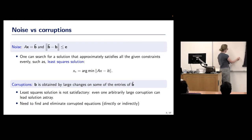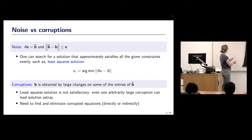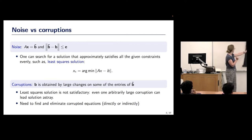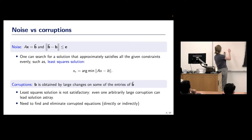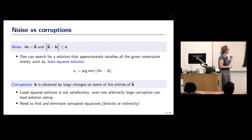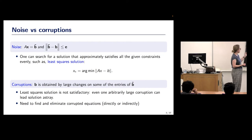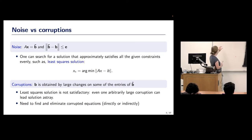I think about this a lot geometrically. When I have my linear system, I have these equations intersecting at one point. Having something wrong with b is just shifting one of the equations. In the first noise framework, all of them are kind of a little bit shifted, so they all still go kind of close to the intersection point. But in the corruption setting, you can have an adversarial shift that takes one equation far away — you really need to change the iterative method.